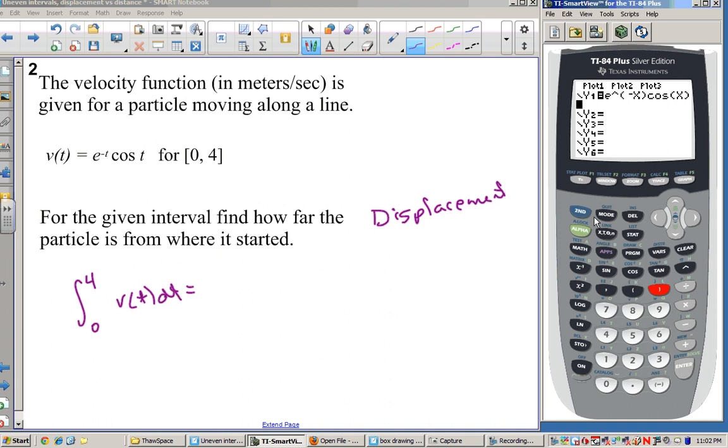Let's put this one into our y equals this time just to show another way to do this. So e to the negative t, and we want to multiply that times cosine of t. So I've got it in my y equals. So let's just get our integral. So math 9. And we're going to go vars, Y vars, Function, Y1. Comma x, comma, 0, comma, 4. All right. So there we go. 0.499 is how far the particle is from where it started.